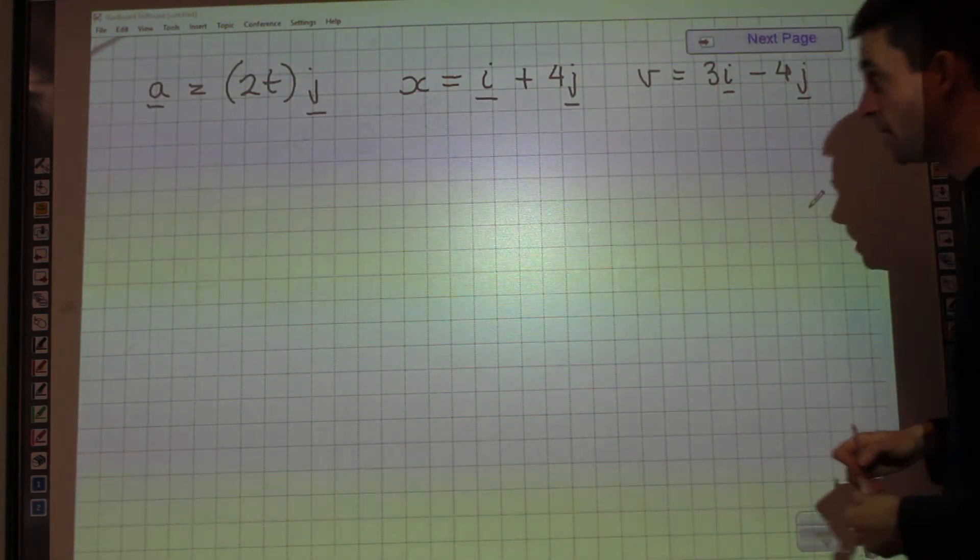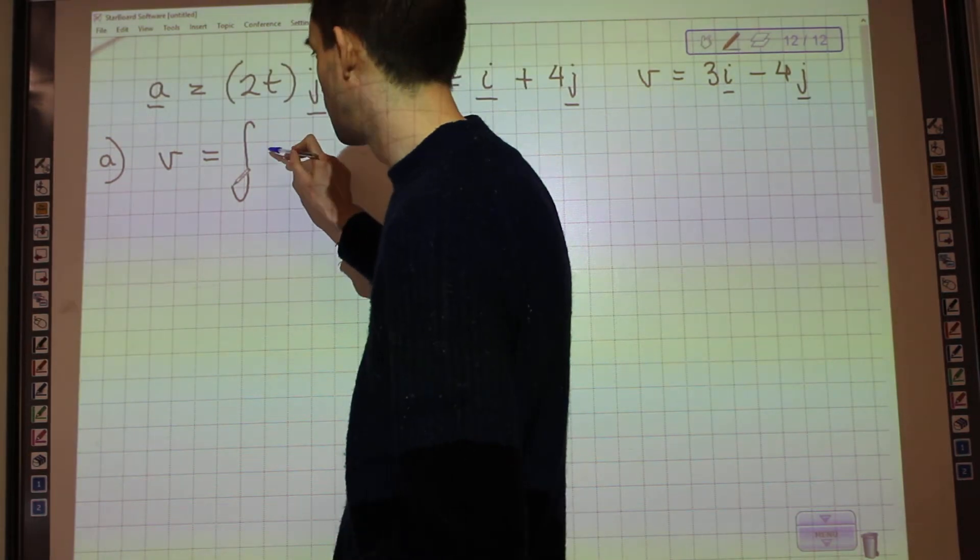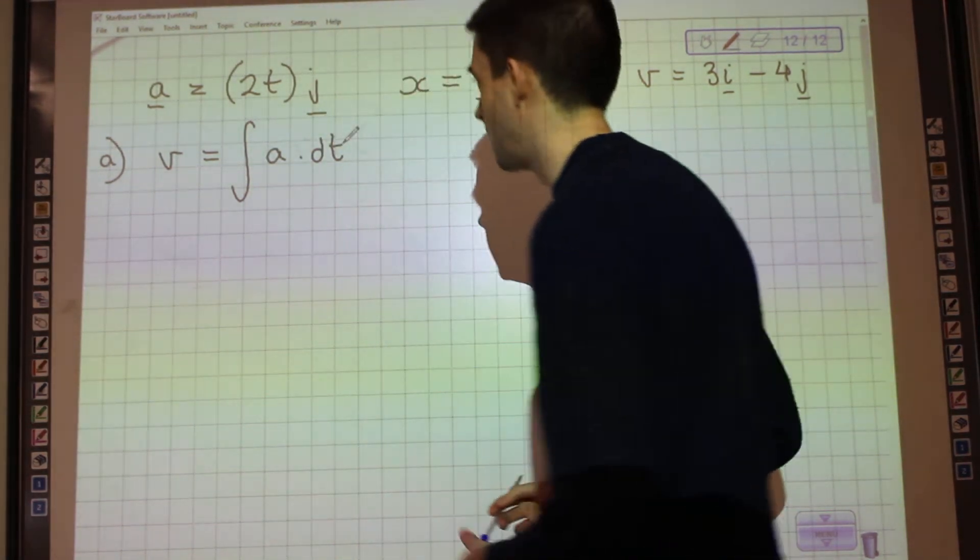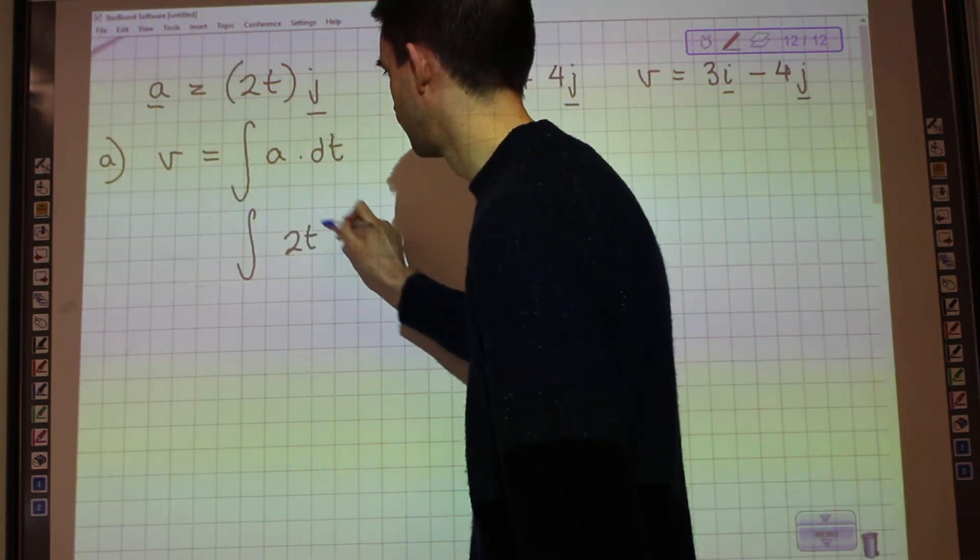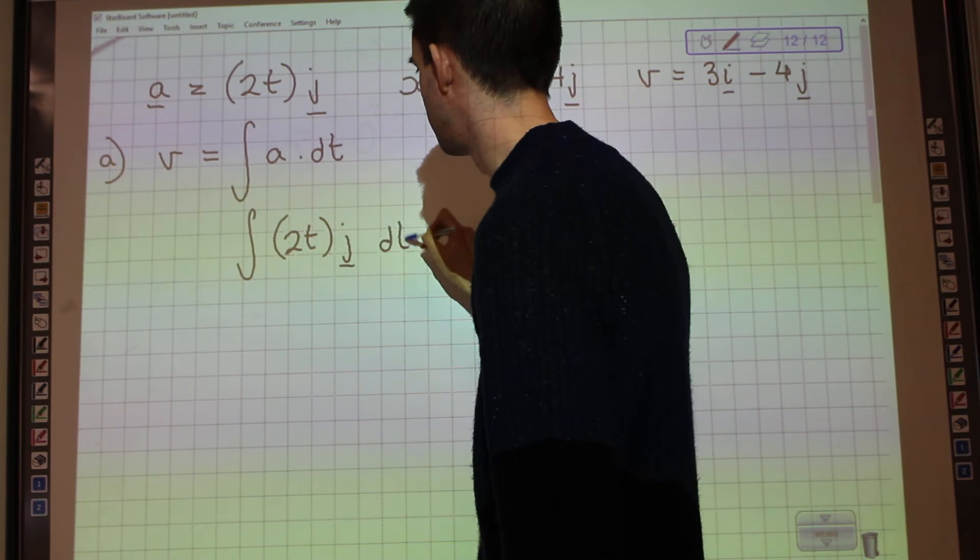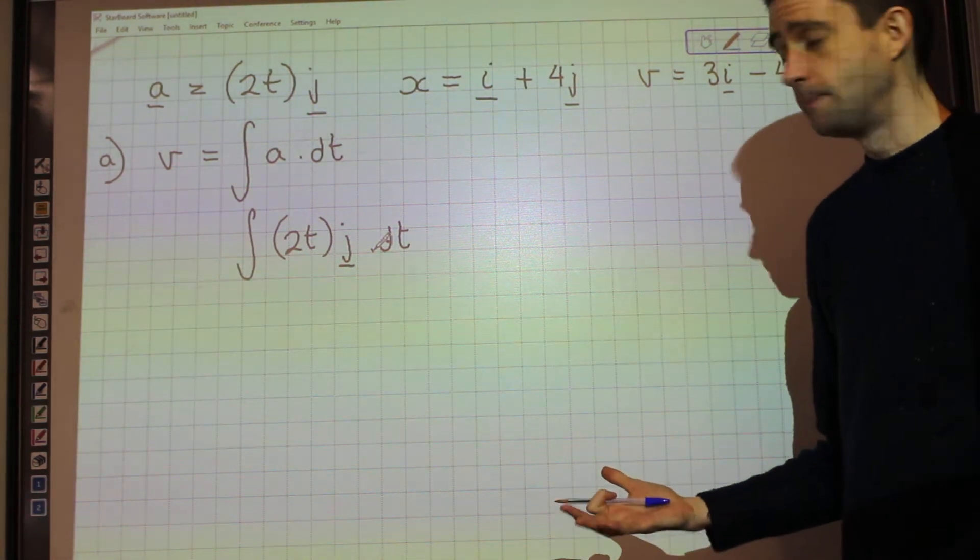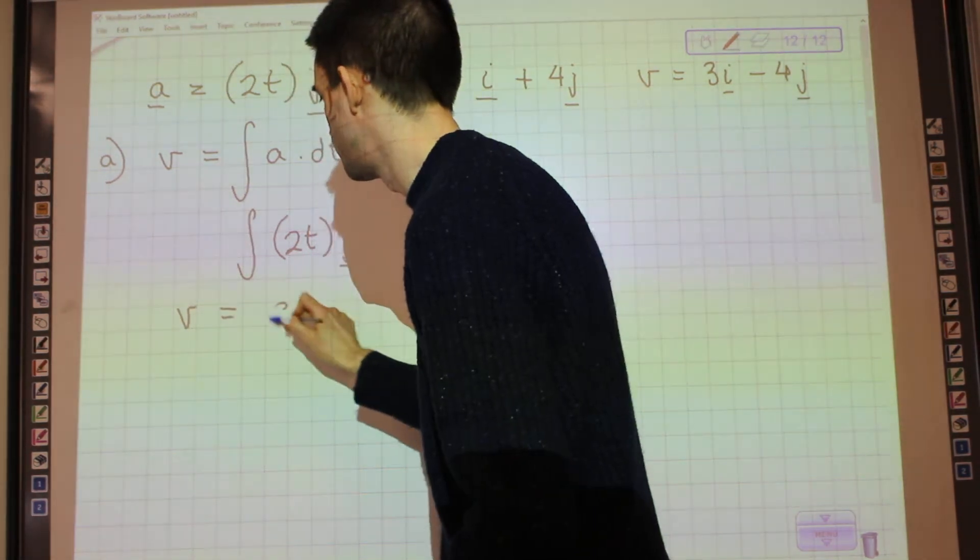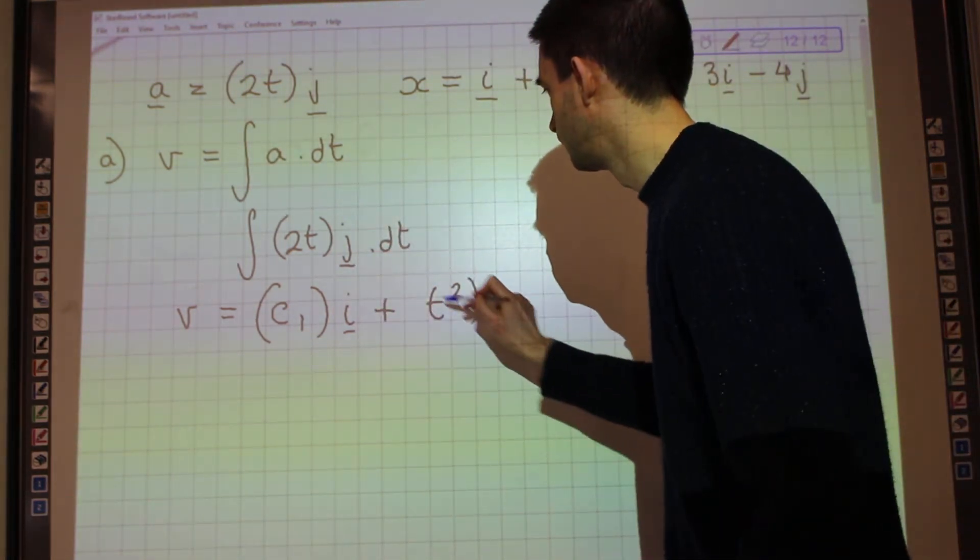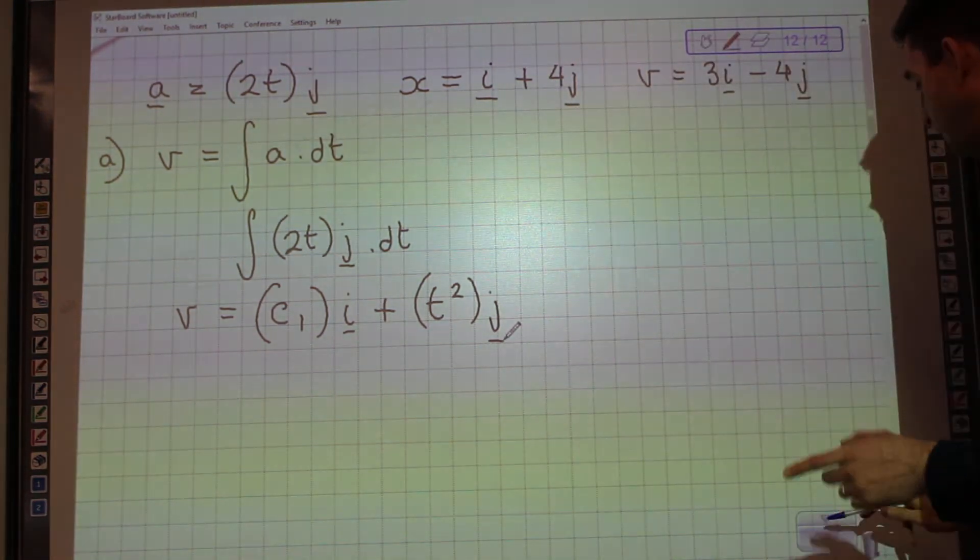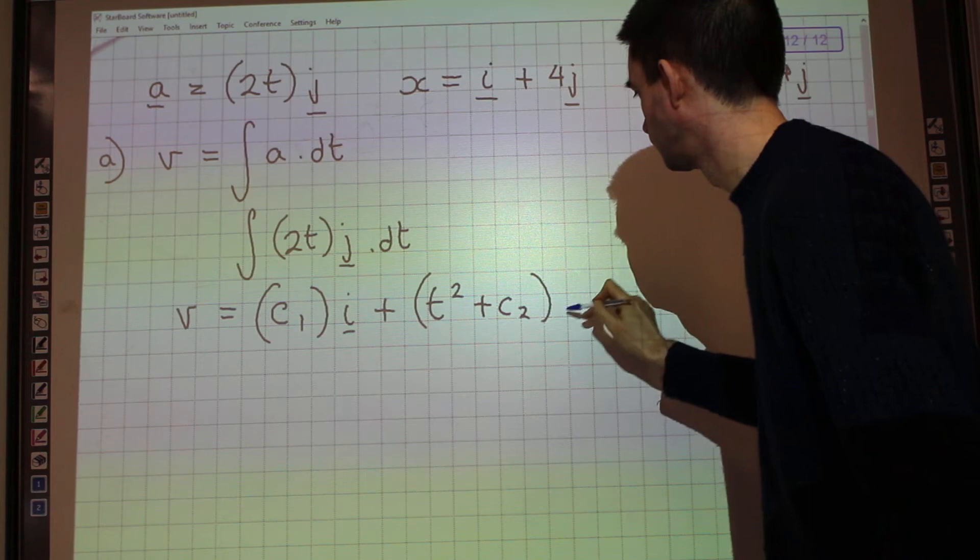There's something that could potentially trip us up here. We should be happy from doing the first example that velocity is the integral of acceleration with respect to t. Now if we are going to integrate 2tj with respect to t, we don't have an i component, but we still have to integrate the i term. So what happens is we actually just get a constant of integration for i, and then we integrate the j bit, and we get t squared j, plus c2j.